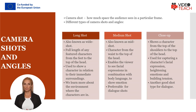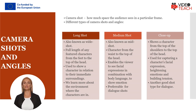As such, we learn more about the environment where the characters are in. Medium shot, also known as mid shot, generally shows a character from the waist to the top of the head. It enables the viewer to see facial expressions in combination with body language in order to show emotion. It's preferable for dialogue shots.